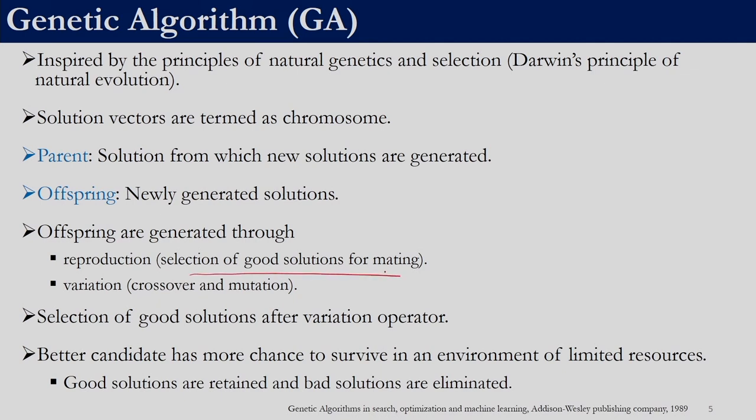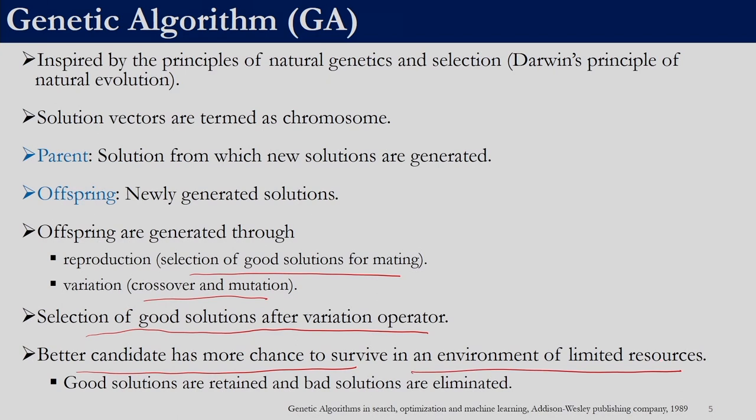Reproduction involves selection of good solutions for mating, whereas variation involves crossover and mutation. Once offspring are generated we select good solutions after the variation operator. Initially we will have a population, we will generate offspring, combine them, and take the best members in the population. A genetic algorithm is designed such that a better candidate has more chance to survive in an environment of limited resources — good solutions will be retained and bad solutions will be discarded. We will look into how binary coded GA can be used for real variables.